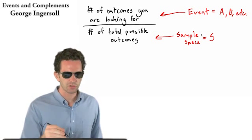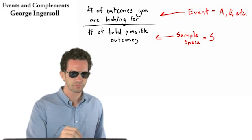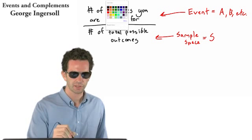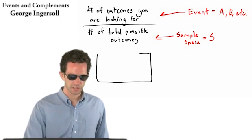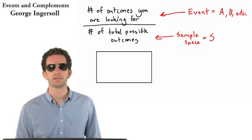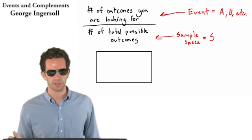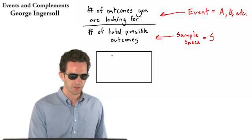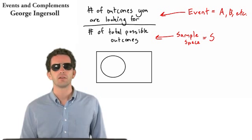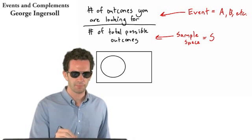I'll go back to using black here. The sample space might be a box. All the realm of possibilities exist within that box. And the event, we'll call this event A, forms a subset of that box.